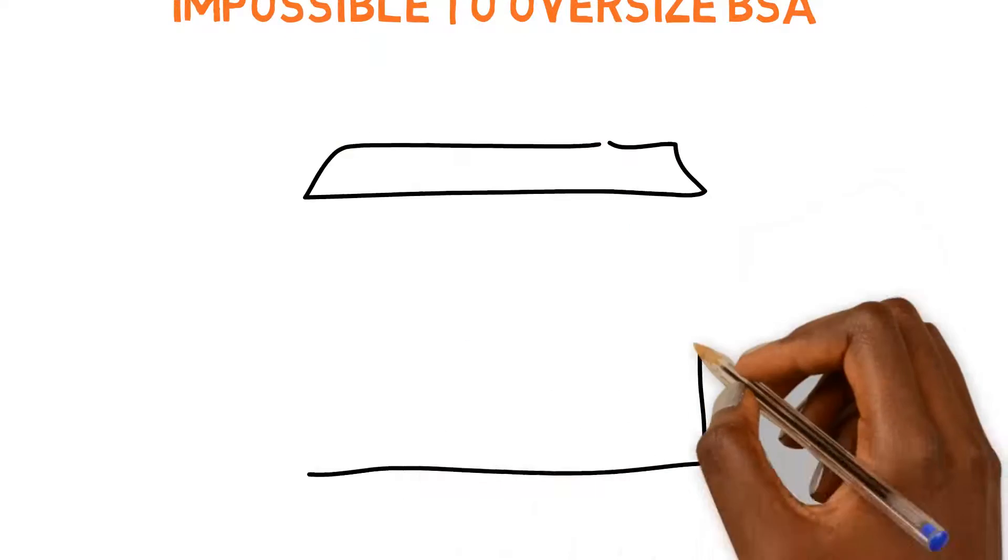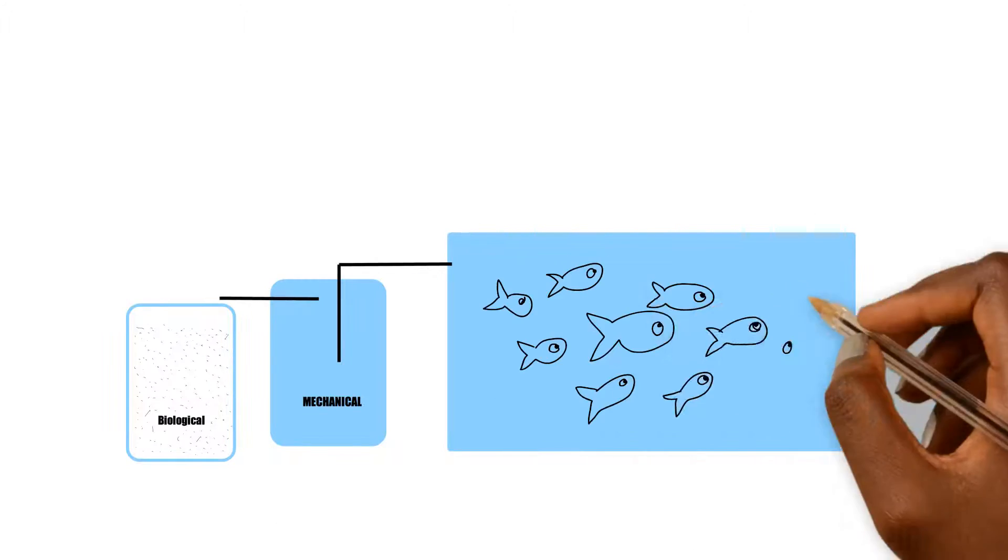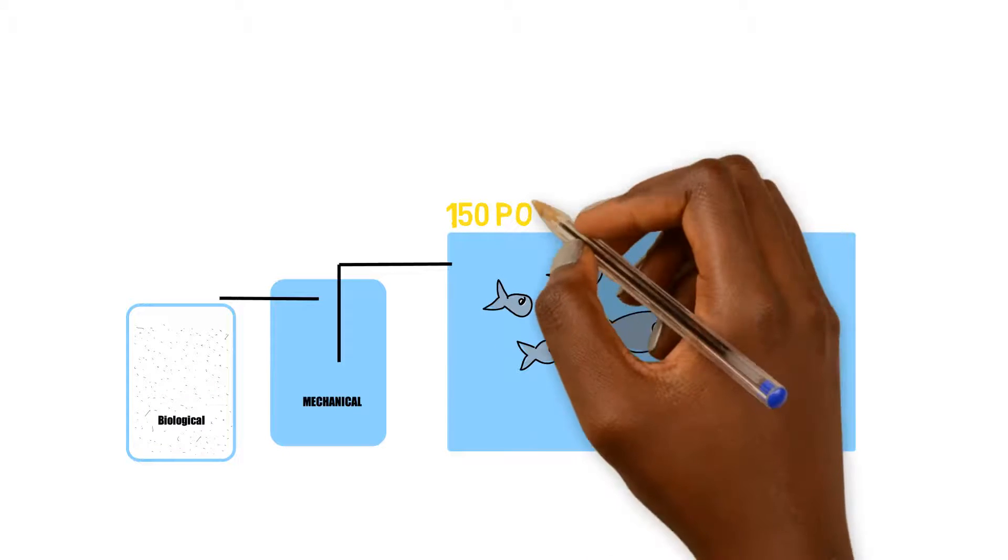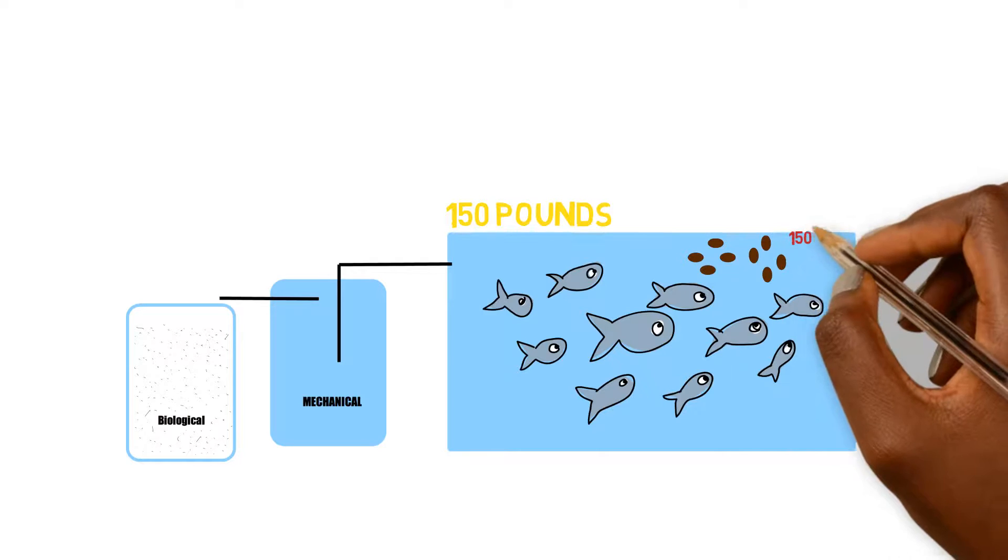Now let's go into the handy dandy bag of examples. Let's say we have a system that holds, let's say 150 pounds of fish.